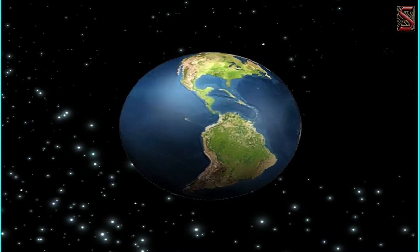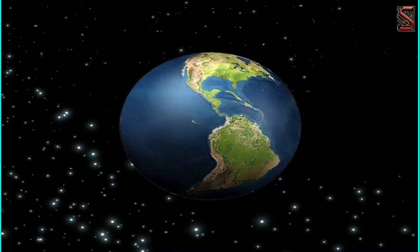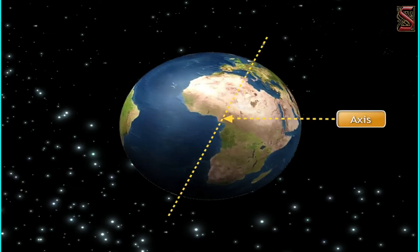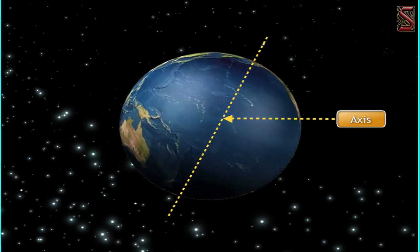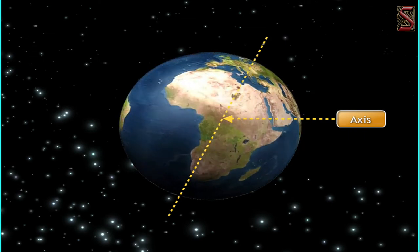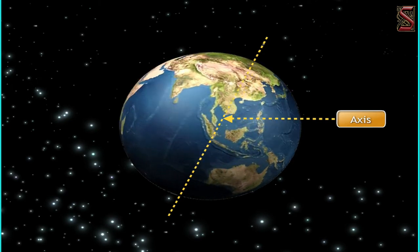We should understand that many factors contribute to the various changes that take place in nature: the spherical shape of the earth and the curve of the surface, the daily rotation of the earth on its own axis, the tilt of the axis of rotation in contrast to the plane on which the earth moves, and the revolution of the earth around the sun once a year.